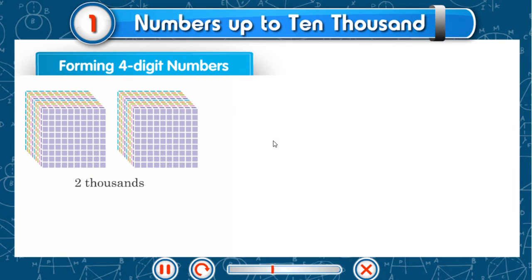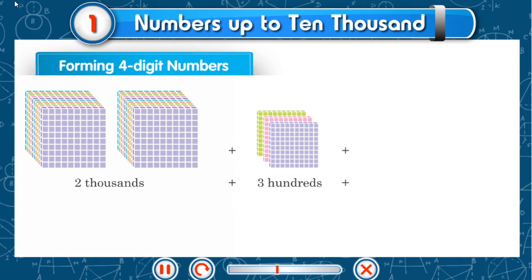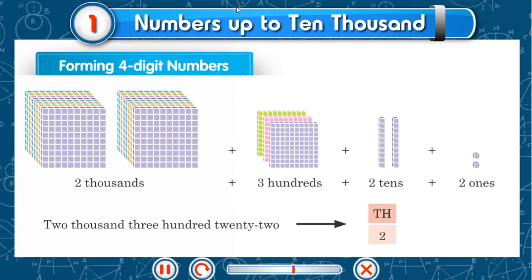2,000 plus 3 hundreds plus 2 tens plus 2 ones: 2,322. Th 2, H 3, T 2, O 2.